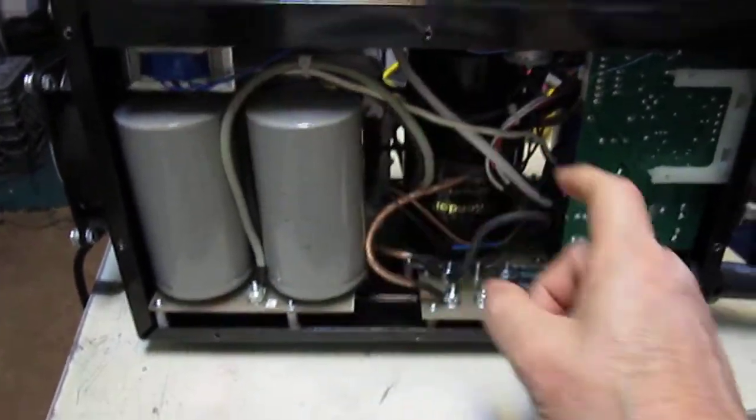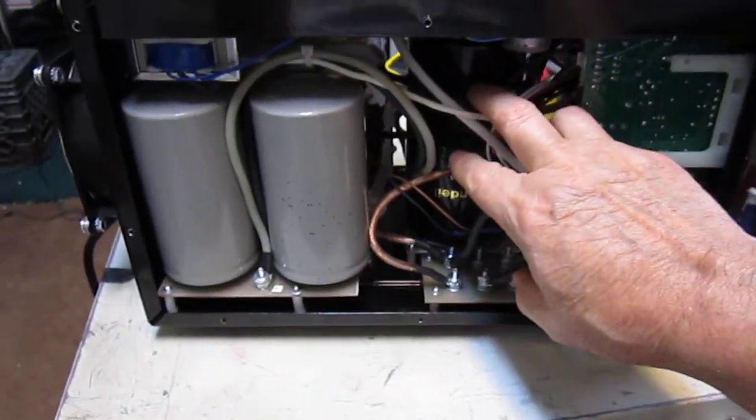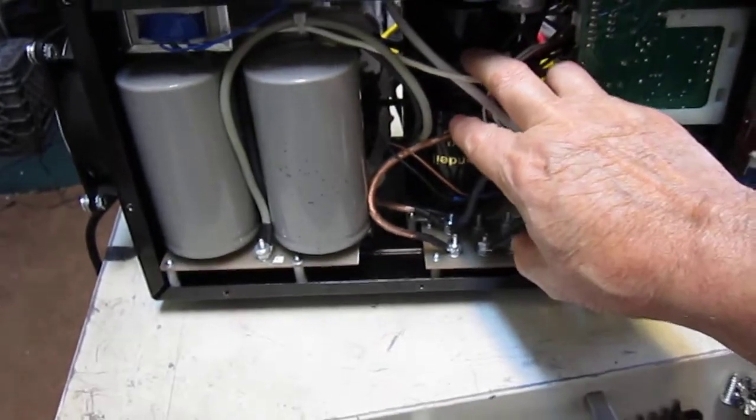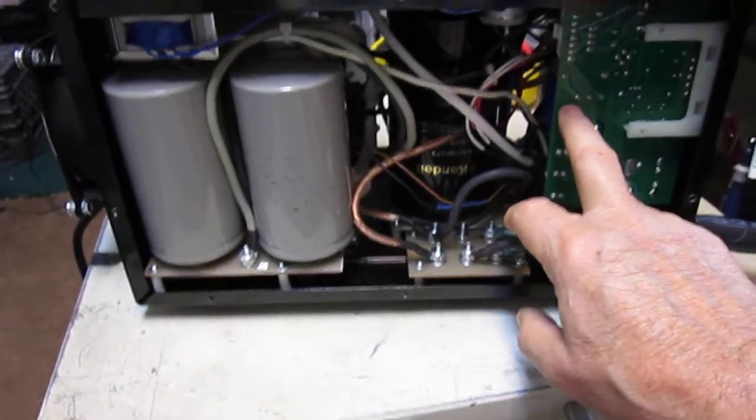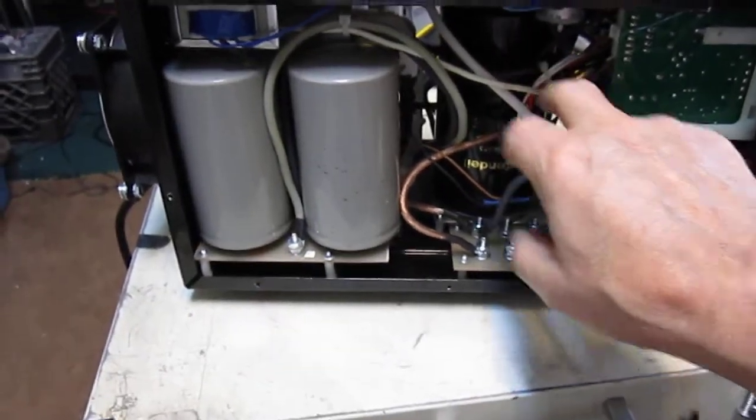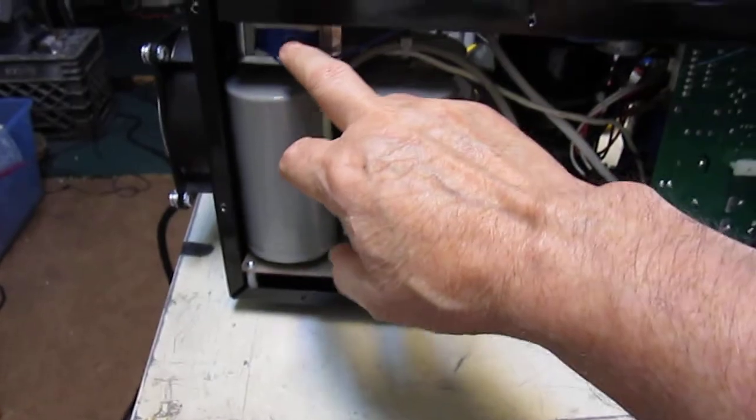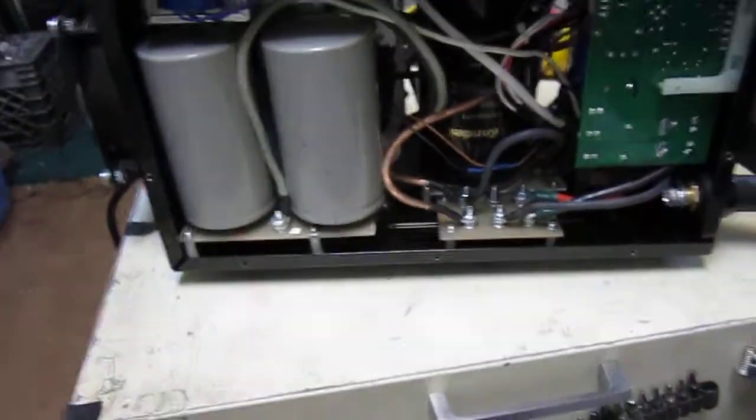Originally what they had done is got the power off these two output leads of the transformer to power this board. So I cut the leads from it and I put in this transformer. I've got about 27 volts AC feeding this board here.